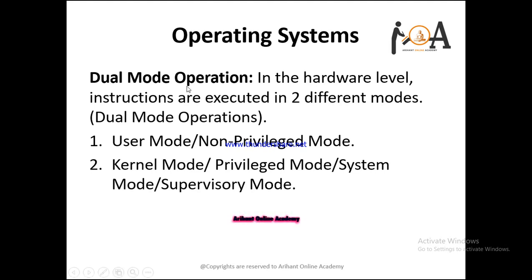Let's start with dual mode operation. In operating system, at the hardware level, instructions are executed in two different modes. Because they are executed in two different modes, they are called dual mode operations. The first is user mode, also called non-privileged mode, and the second is kernel mode, also called privileged mode, system mode, or supervisory mode.